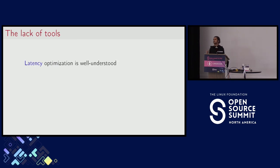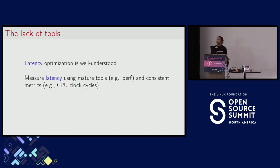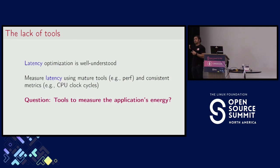Let me start by asking a question: how do you optimize latency? All of us have a software engineering background and are familiar with latency or performance optimization. You would say: I measure my program's latency using well-established tools — for example, perf or the time command — using well-known metrics such as seconds, milliseconds, or CPU clock cycles. I can do this easily, and I know exactly what to do. Now let's make it harder: what if I ask you to tell me how much energy your application is using? Can you point me to a tool right now, off the top of your head?